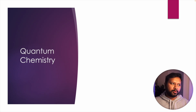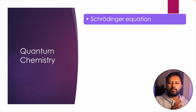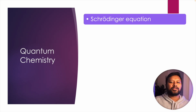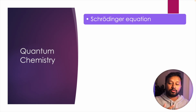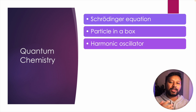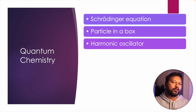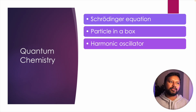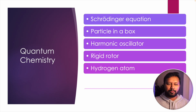The next topic is quantum chemistry. We will only talk about the major things from where you will get questions. Starting with the Schrödinger equation — you don't have to memorize it, but the application part is important: how different systems like particle in a box are solved using it. You should understand Ĥψ = Eψ, what operators are, and what eigenvalues and eigenfunctions are. Once you understand that, it becomes easy to approach particle in a box, the harmonic oscillator, and the rigid rotor.